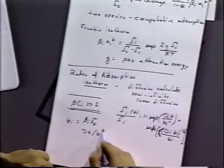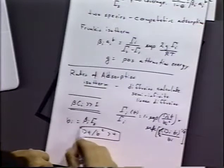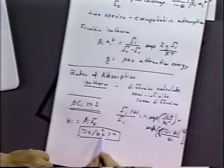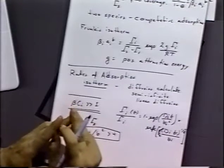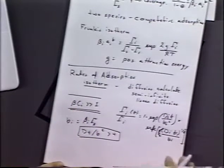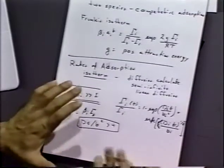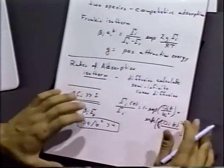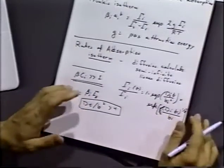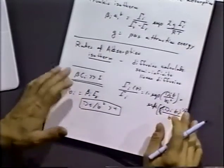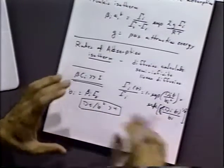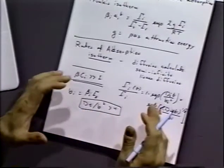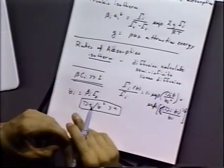We have to have t equal to infinity to get full coverage under these conditions. We need a time long enough to satisfy the relationship D_i times t over b to be greater than about 4, before we really get full coverage. That's not a particularly accurate method of calculation because it's a linear form of the isotherm. You could actually use a simulation — like we did with CVs — to simulate the adsorption using the full isotherm, which would give a more accurate result.